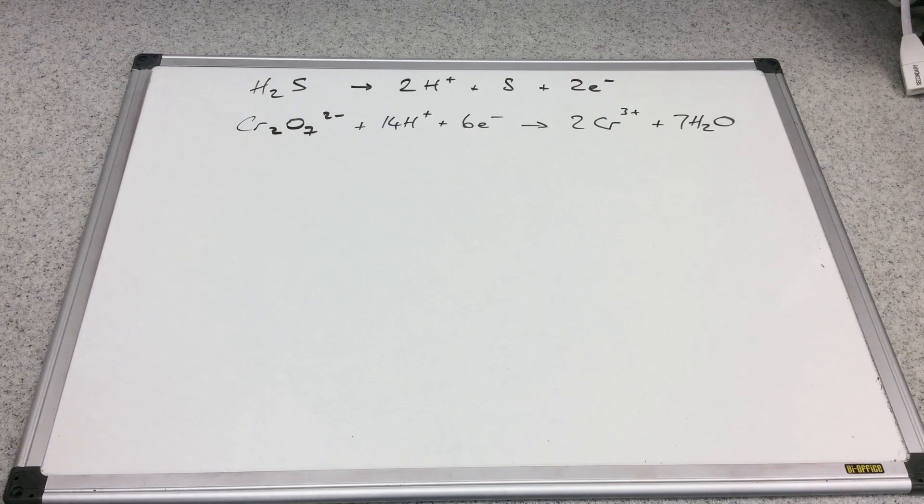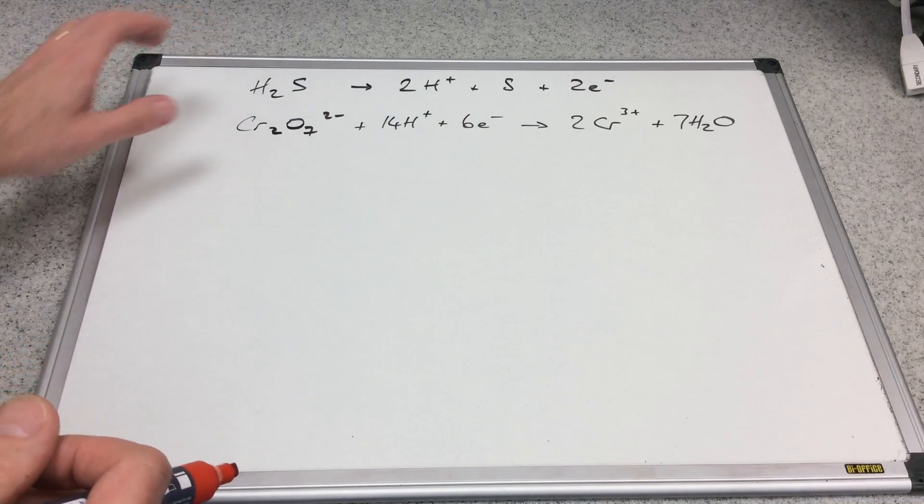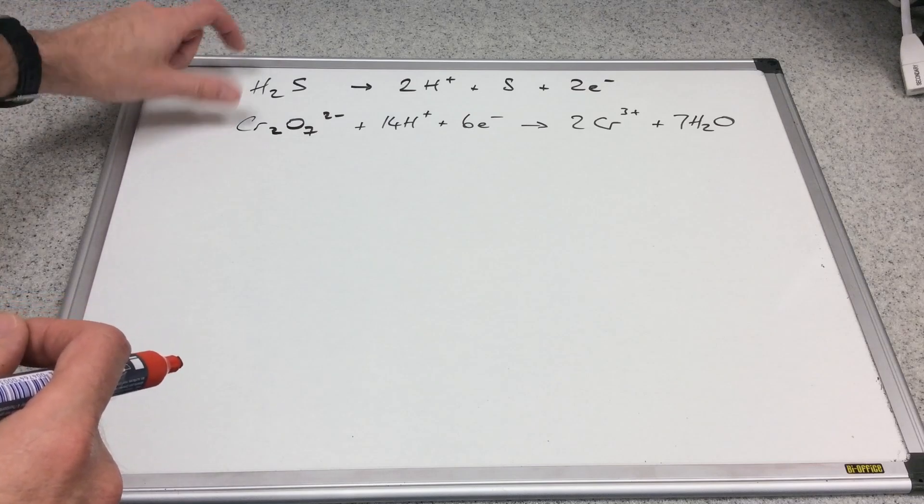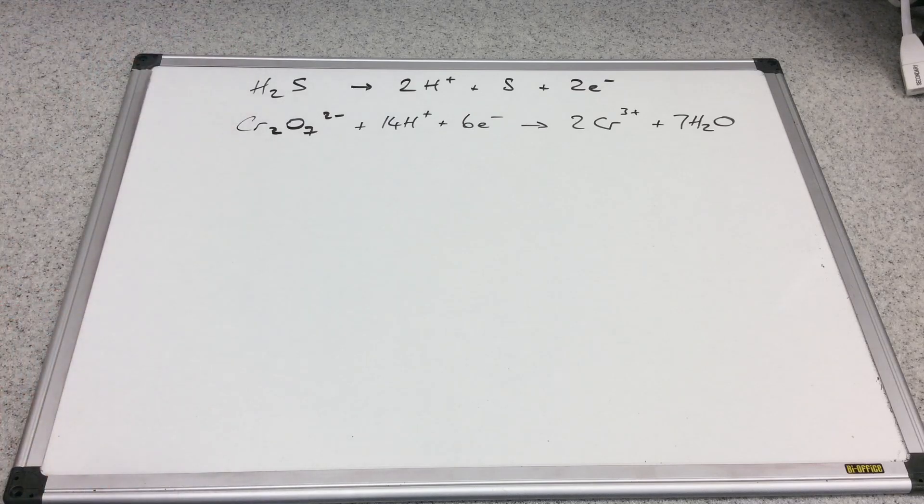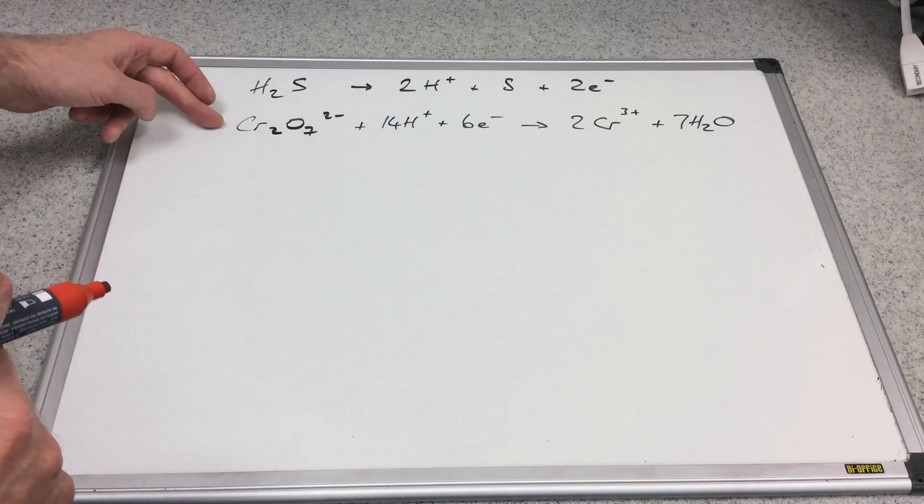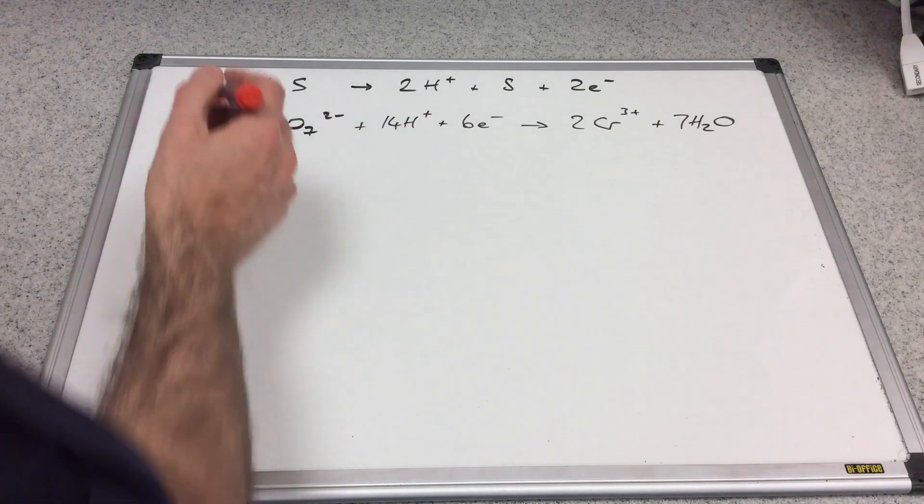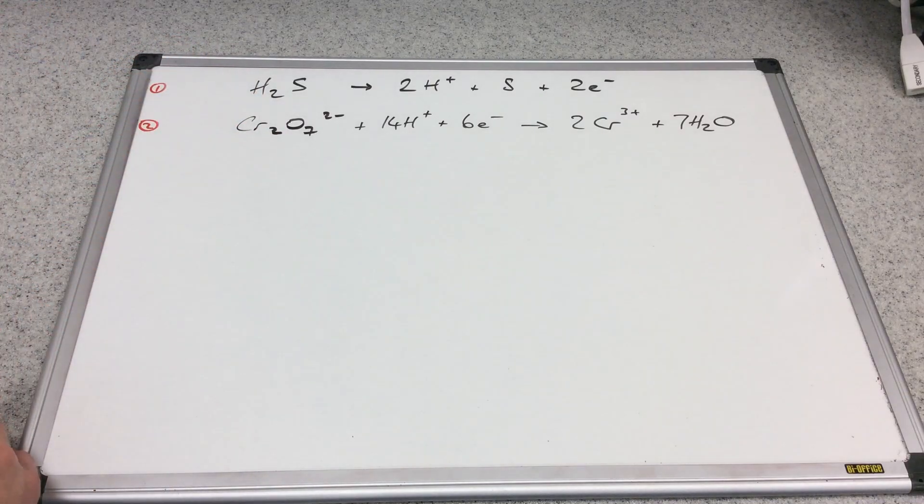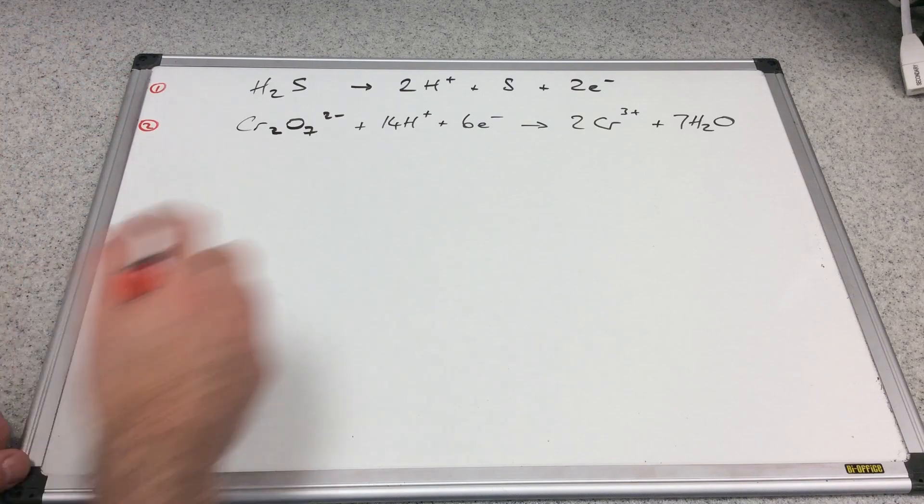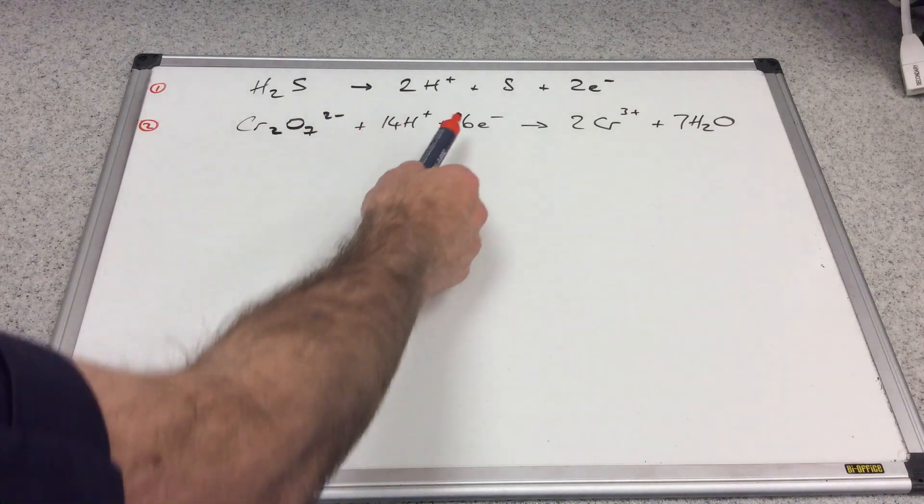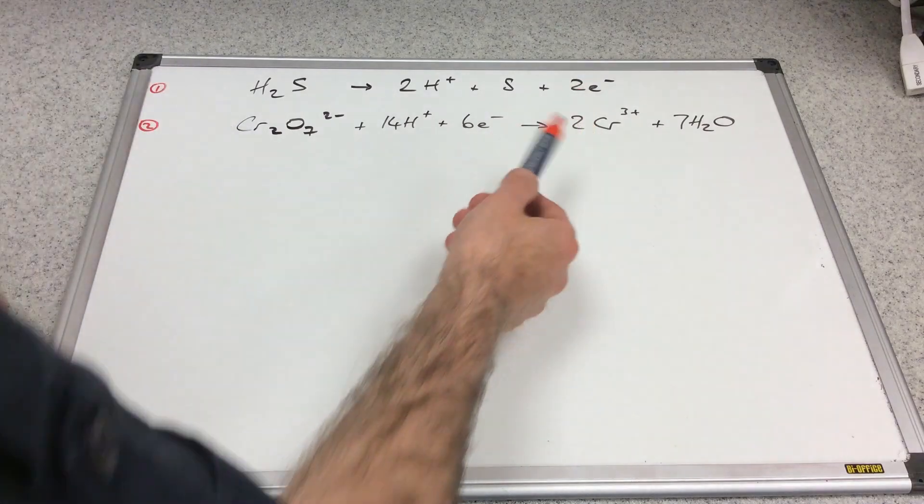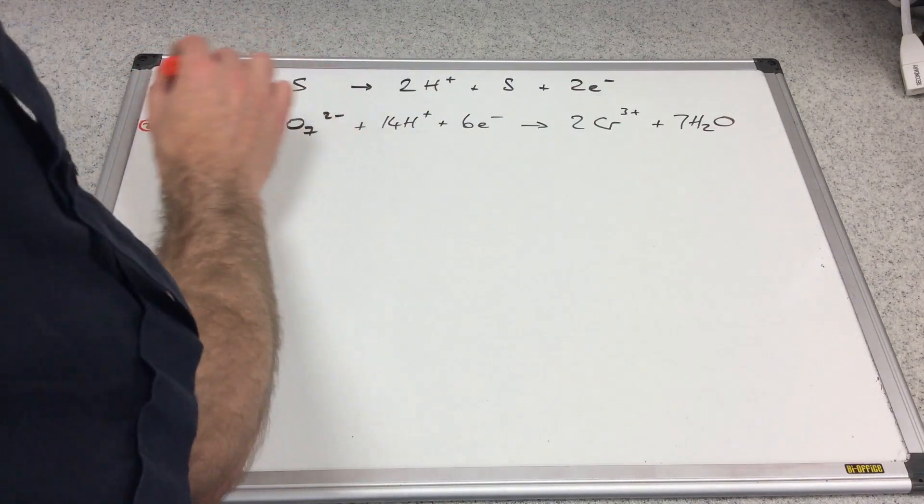I just want to finish with one more to explain one final point. We've already seen these two half equations, so I'm not going to bother showing where they've come from. We basically need to marry these two together to form the overall redox equation for the reaction between hydrogen sulfide and dichromate ions in acidic solution. We're treating them as simultaneous equations, and we want the electrons to disappear when we add the half equations together. We've got two electrons on the right of number one, six on the left of number two, so we need to get this up to six. We need to multiply equation number one by three.